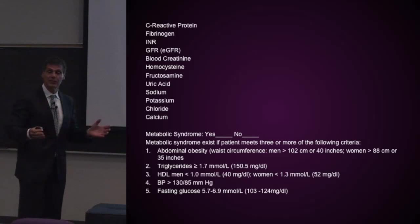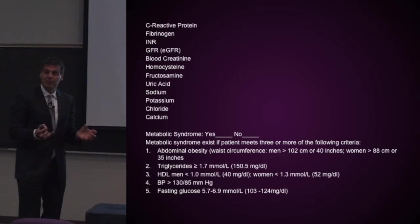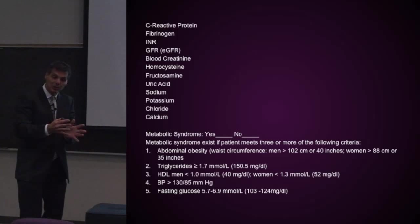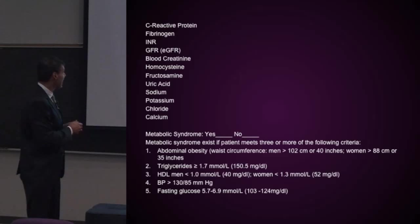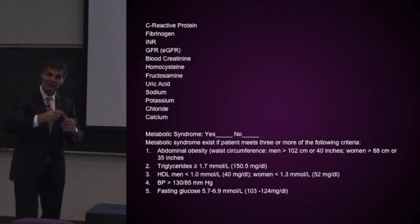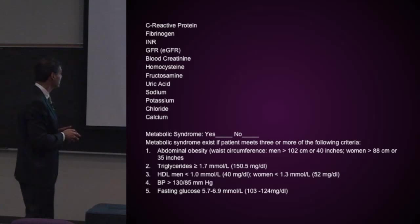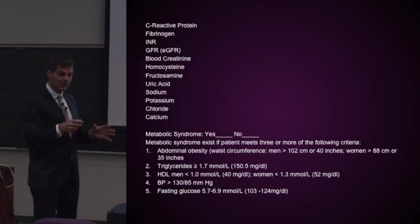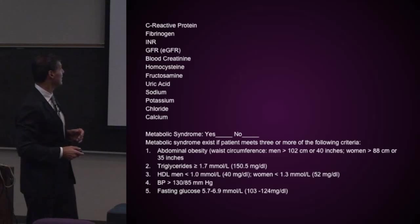What's the uric acid level? Uric acid makes the blood very sticky, increasing platelet adhesion, and it also inhibits the normal release of nitric oxide, so blood vessels can't dilate normally, raising blood pressure. Uric acid not only increases the risk of gout — which we'll talk about — but it also has these negative effects on the vascular system. And then I'd like to know the sodium, potassium, chloride, and calcium blood levels, looking at these different electrolytes.